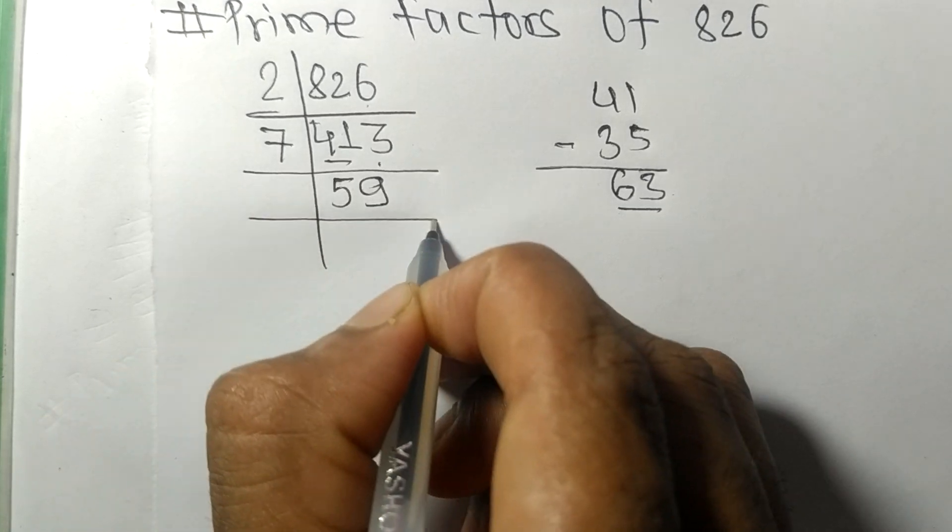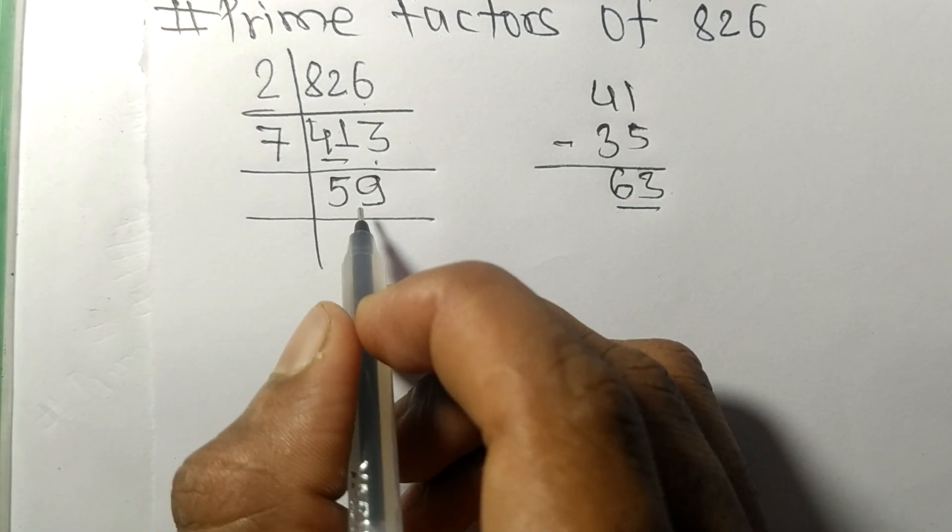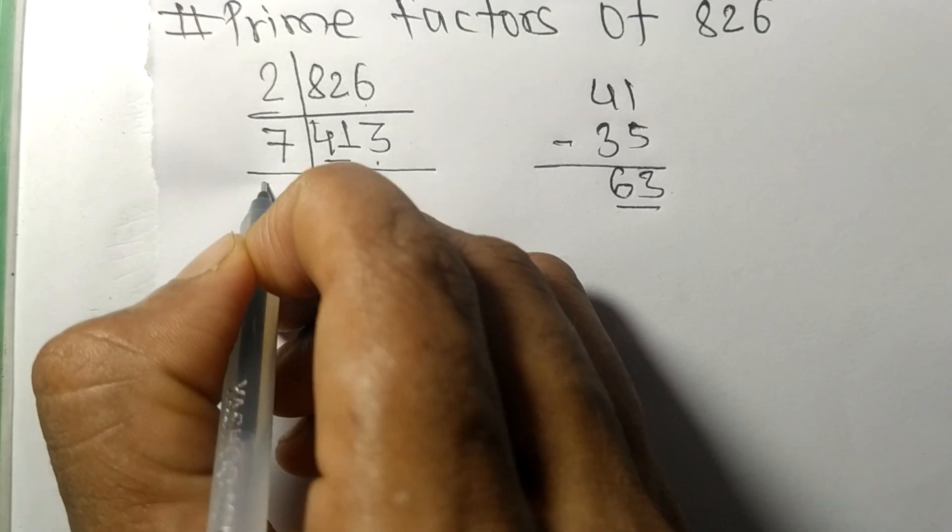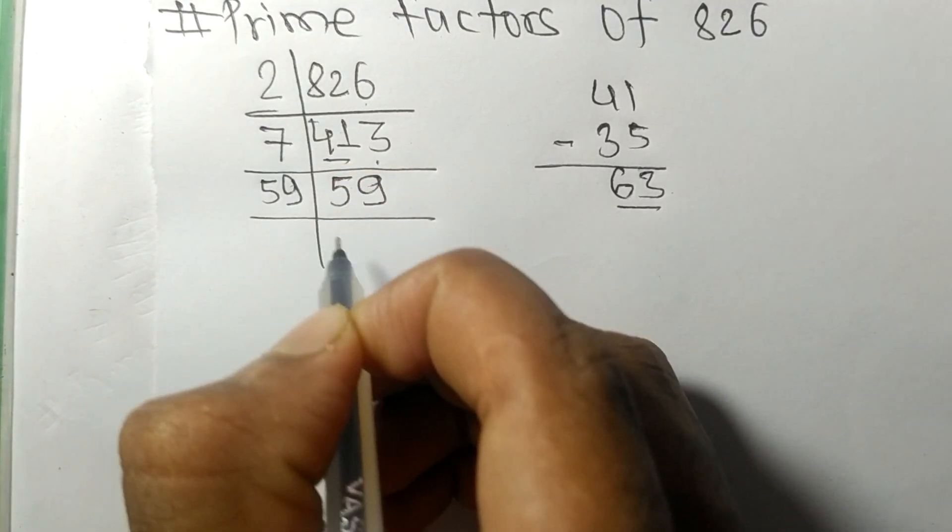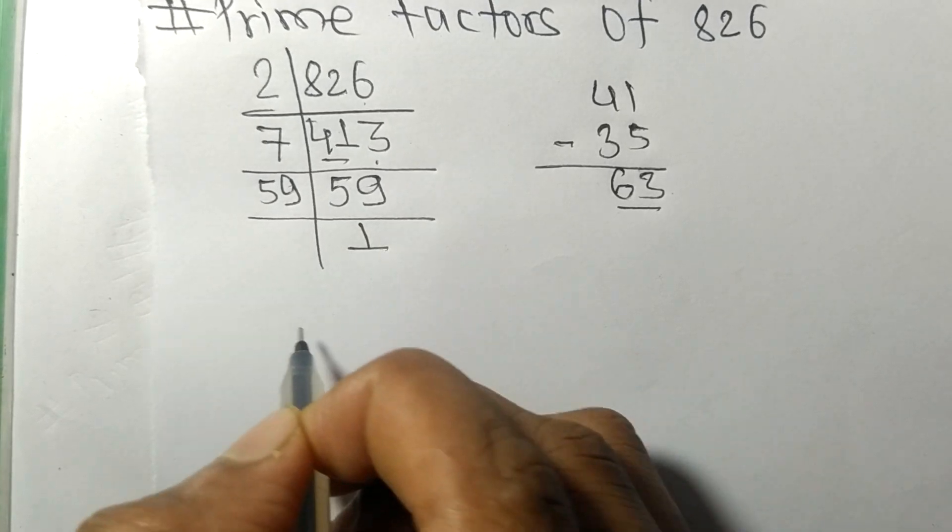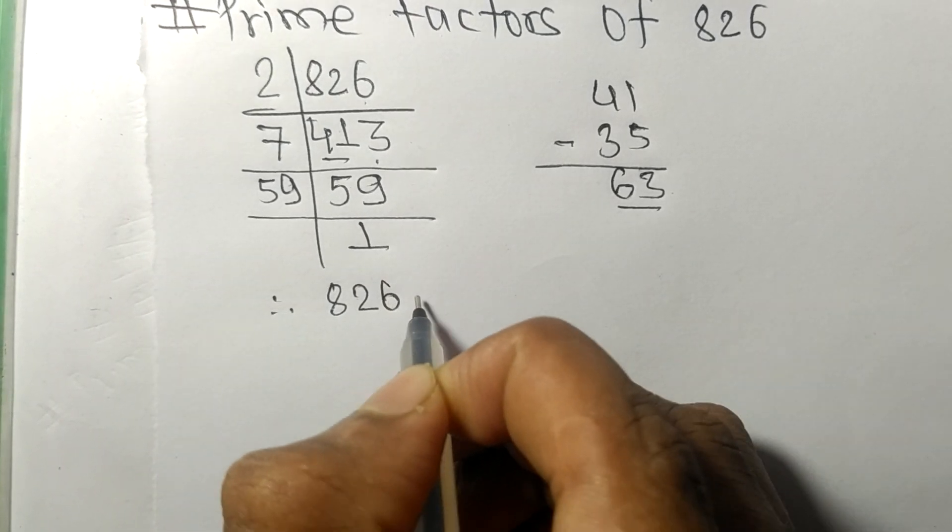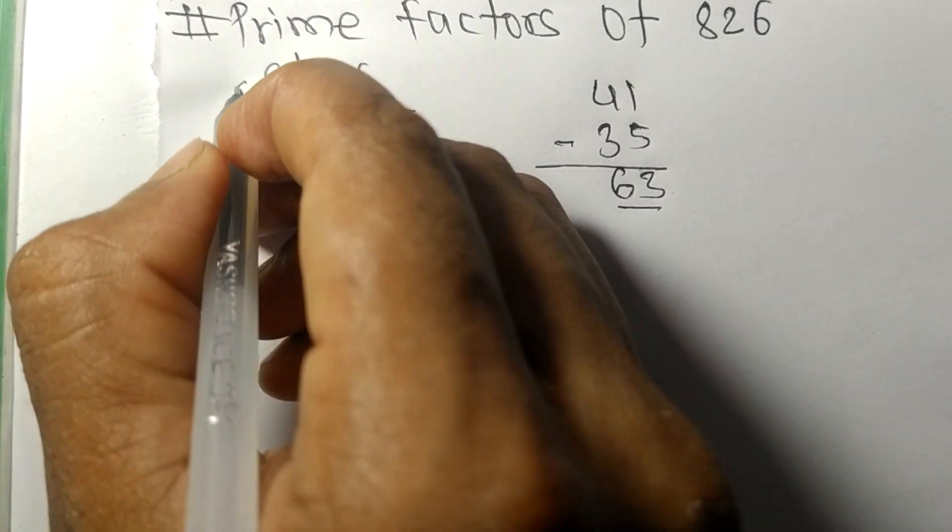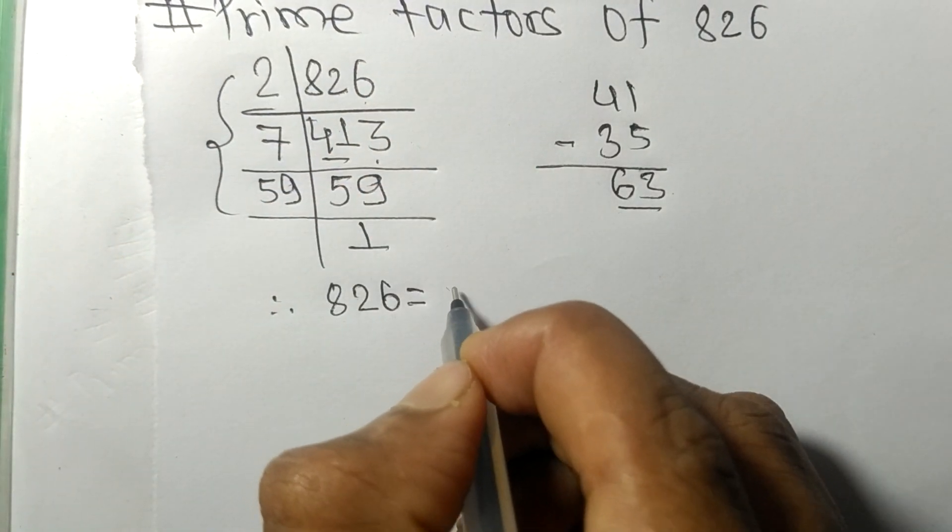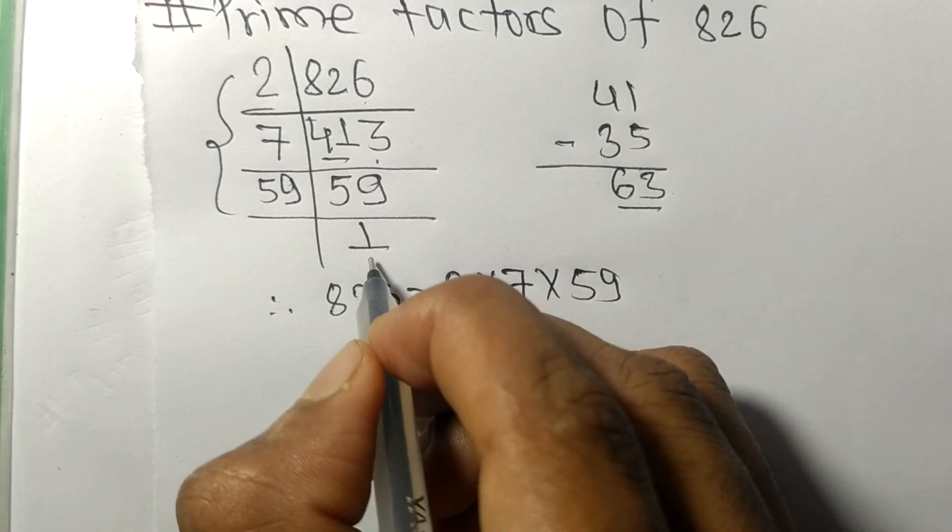So now we got 59, which is a prime number, so it is exactly divisible by 59 only. And on dividing we get 1. Therefore, 826 is equal to 2 times 7 times 59 times 1.